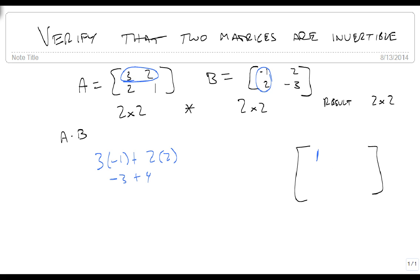Now I am going to do second entry is first row, second column, so that is 3 times 2 plus 2 times minus 3, which is 6 minus 6, which is 0.